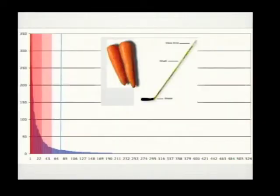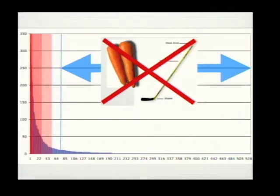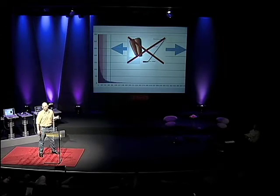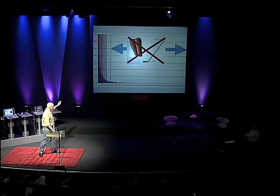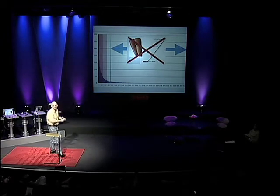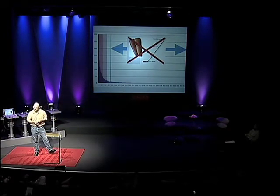Institutions only have two tools: carrots and sticks. And the 80% zone is a no-carrot, no-stick zone. The costs of running the institution mean you cannot take on the work of those people easily in an institutional frame. The institutional model always pushes leftward, treating these people as employees. The institutional response is: I can get 75% of the value for 10% of the hires — great, that's what I'll do.